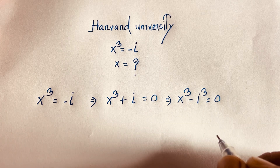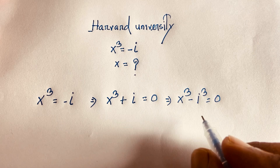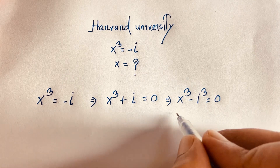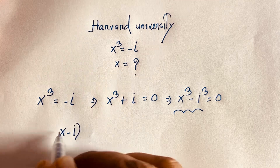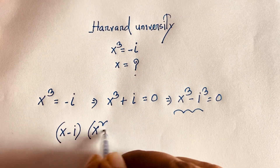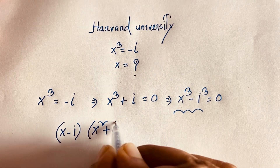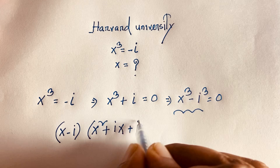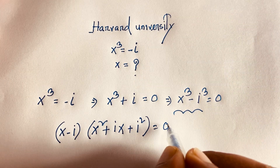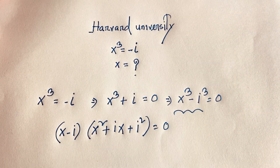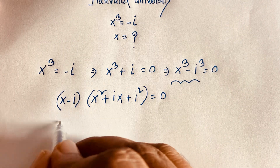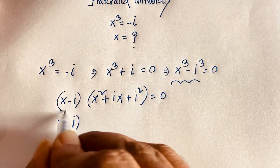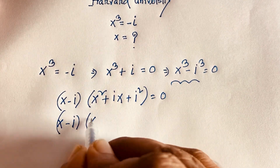Now using the identity a cubed minus b cubed equals (a minus b)(a squared plus ab plus b squared), I can factor this expression. It becomes (x minus i)(x squared plus ix plus i squared) is equal to 0.